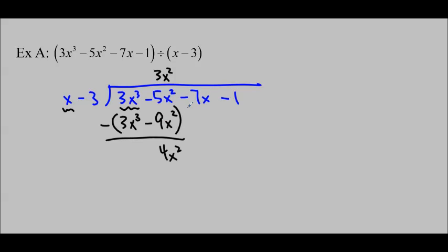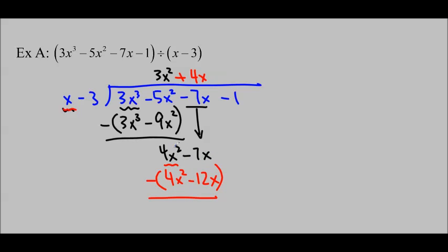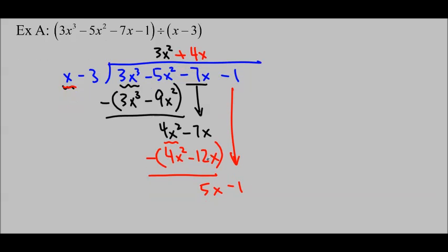Just like with numbers, I'm going to take the next term and move it down. So I put negative 7x here. I'm going to concentrate on this 4x squared and this x. x times what is 4x squared? The answer is 4x. Multiply 4x times (x minus 3) to get 4x squared minus 12x. Subtracting both terms: 4x squared minus 4x squared is 0; negative 7x minus negative 12x gives 5x. Bring the negative 1 down. 5x is x times 5. Do 5 times (x minus 3), which is 5x minus 15. Since you are subtracting, this is negative 1 plus 15. The remainder is 14.